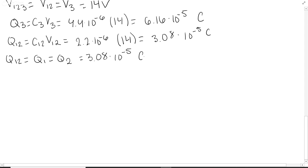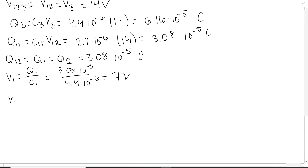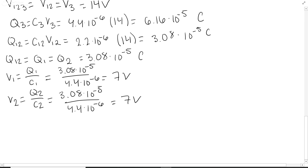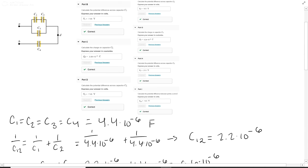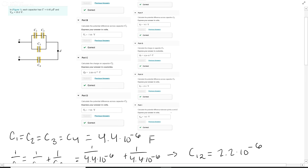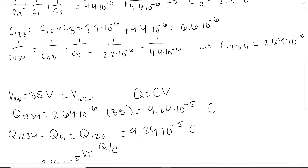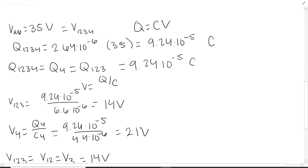The last values to find are V1 and V2. V1 equals Q1 over C1 equals 3.08×10⁻⁵ over 4.4×10⁻⁶, and V2 equals Q2 over C2 equals 3.08×10⁻⁵ over 4.4×10⁻⁶. So V1 and V2 are the same — that's the voltage in that series. The last question asks for the potential difference between points A and D, which is the voltage across C1,2,3, and that's 14 volts.